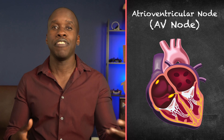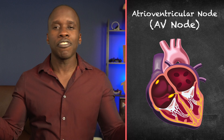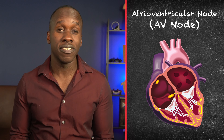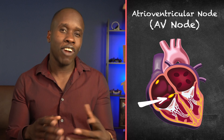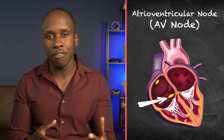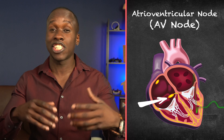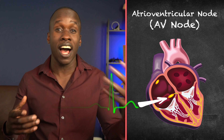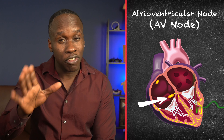There's another structure called the atrioventricular node, or the AV node, that's somewhat similar to the SA node but with some differences. The first difference is the location — it's found around the lower back section of the interatrial septum, which is the wall between the left and right atria. Just like the SA node can automatically generate a signal, the AV node can do that as well.